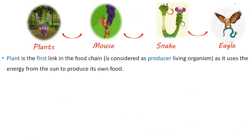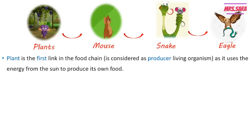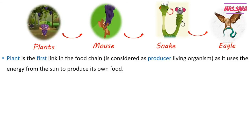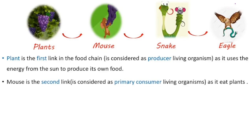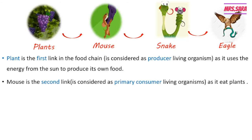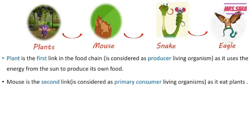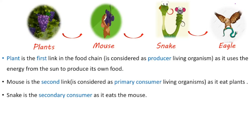Plants are the first link in the food chain, considered producers, because they use energy from the sun to produce their own food. The mouse is the second link, considered a primary consumer, because it eats plants. The snake is the secondary consumer because it eats the mouse.